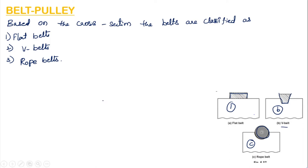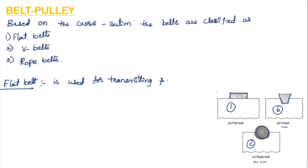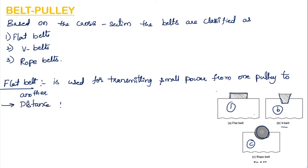A flat belt is used to transmit small power from one pulley to another, and the distance between pulleys is not more than 8 meters. So the condition for using a flat belt is that the distance between the pulleys must not exceed 8 meters.